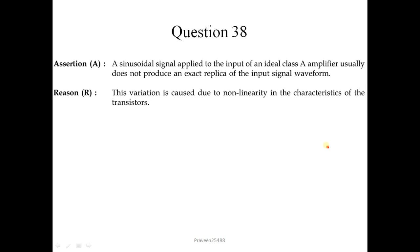Question number 38: A sinusoidal signal applied to the input of an ideal Class A amplifier usually does not produce an exact replica of the input signal waveform — this assertion is not correct, since an ideal Class A amplifier should produce an exact replica. The reason states this variation is caused due to non-linearity in the transistor characteristics — this is correct. So A is false but R is true; correct option is 4.